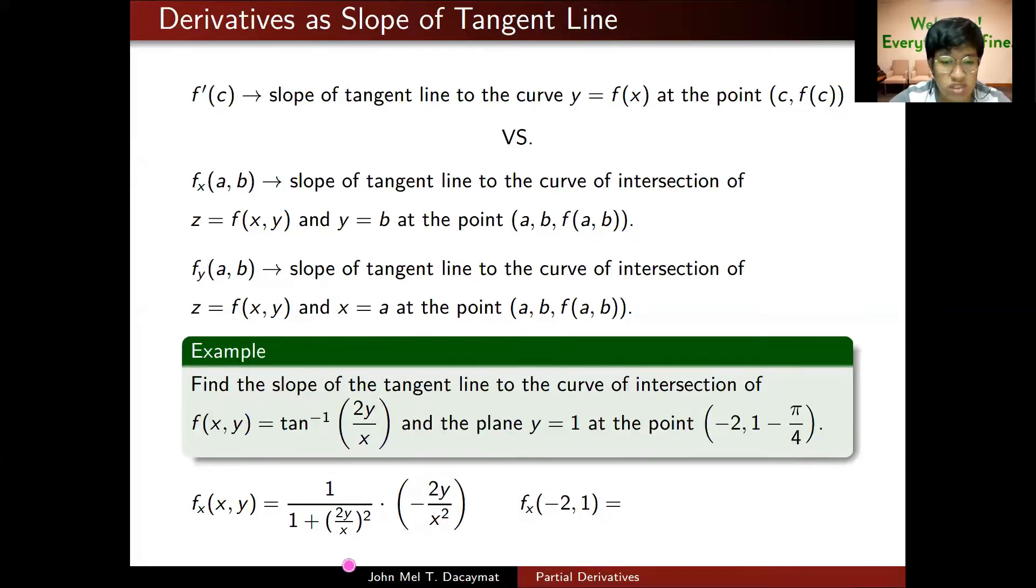If I get f sub x of (x, y), I differentiate with respect to x. Tangent inverse of something gives 1 over 1 plus squared of something. The derivative of 2y over x, with x as my variable, derivative of 1 over x is negative 1 over x squared times 2y, giving negative 2y over x squared. Plugging in x equals negative 2 and y equals 1, I get 1 over 1 plus 1, which is 2, times negative 1 half. That gives negative 1 fourth, which is the slope I'm looking for.